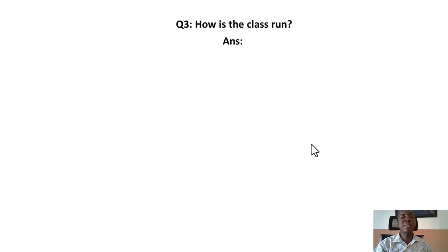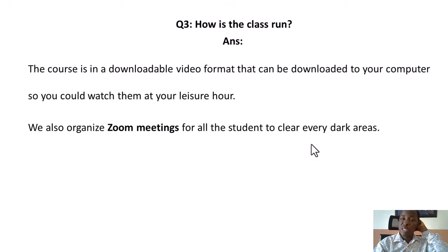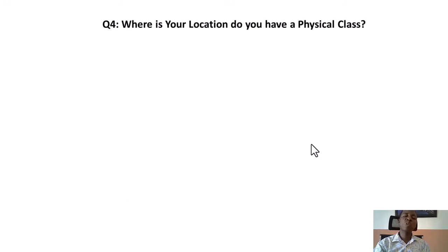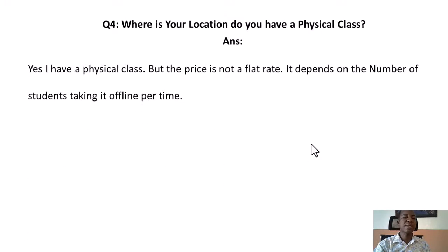The third question is: how is the class run? This is a video course in downloadable video format — you can download the videos to your computer and watch them at your leisure. We also organize Zoom meetings for all students to clear up any areas they find difficult. The fourth question is: what is your location — do you have a physical class? Yes, I have physical classes and I have an office. The price for physical training is not a flat rate — it depends on the number of people. If you want a one-on-one class at my office, drop a comment and contact me on WhatsApp so I can give you the price.